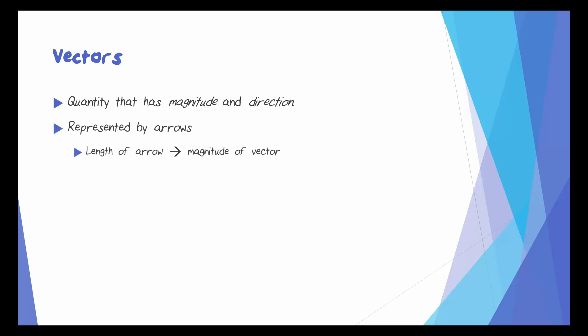The length of the arrow represents the magnitude of the vector, and the direction of the arrow represents the direction of the vector.